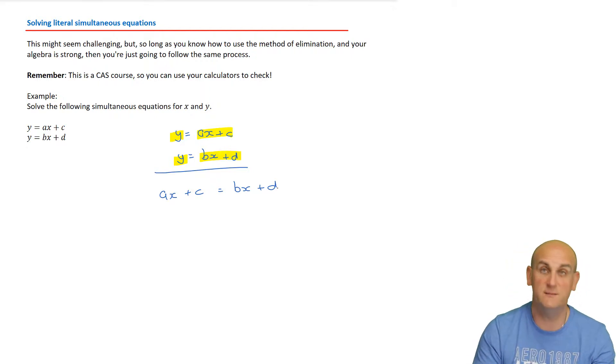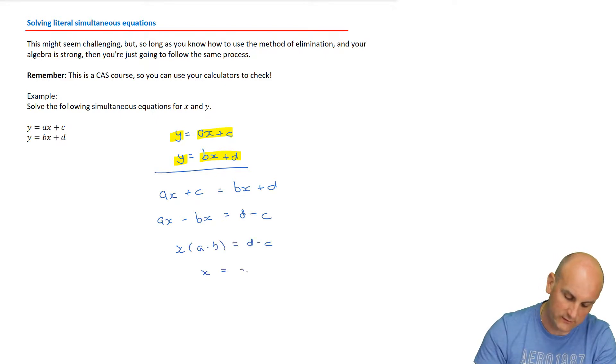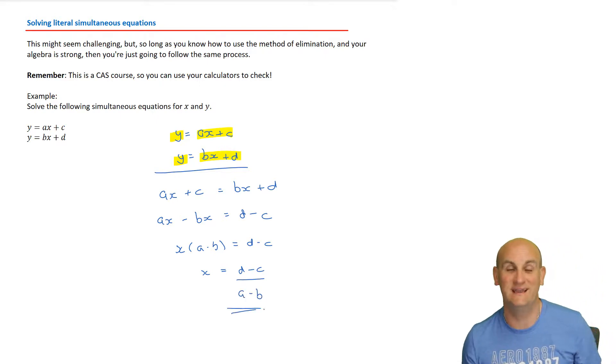For that one point when the graphs meet, the x values and the y values are the same in both equations, which means if this and this are the same, then this and this must also be the same. So equating them, I get ax plus c equals bx plus d. I'm going to say ax minus bx equals d minus c. Two become one. X times a minus b equals d minus c. So x is d minus c all over a minus b. That looks gross. We're not finished because once we've found x, we have to go back and find y by substituting it into my equation.